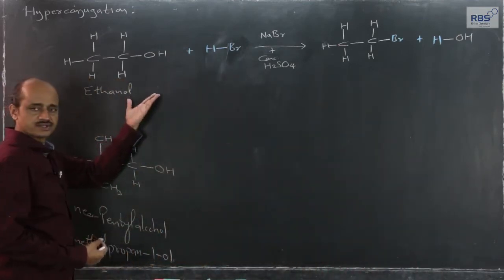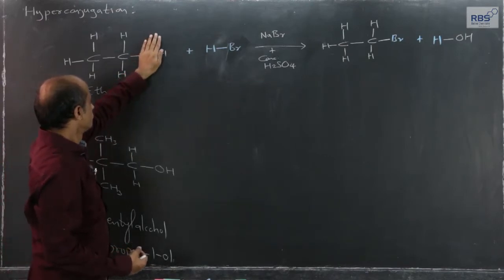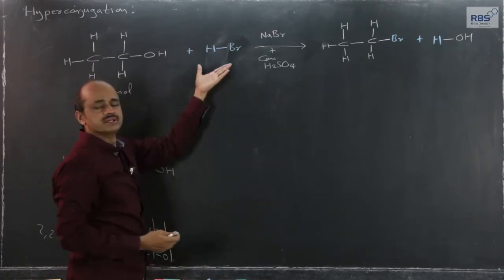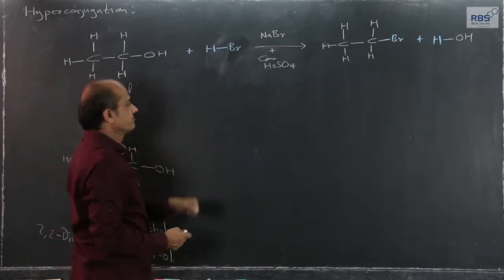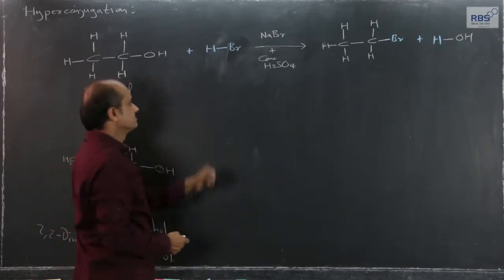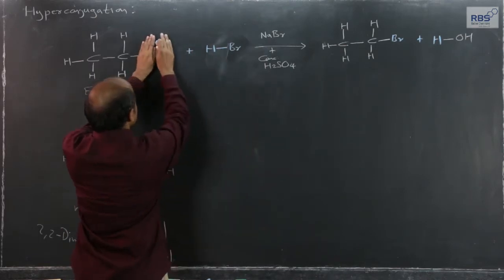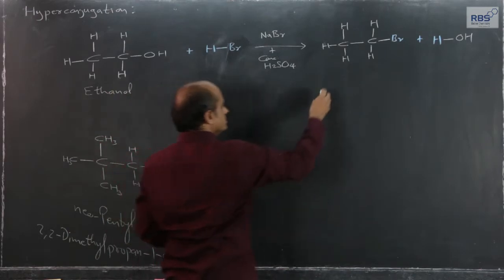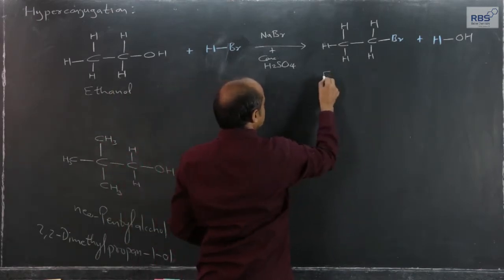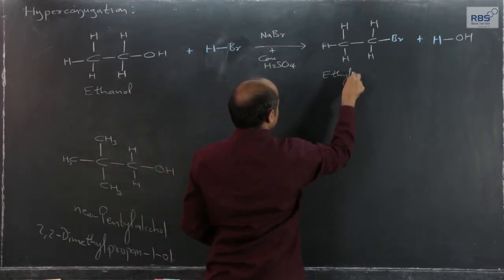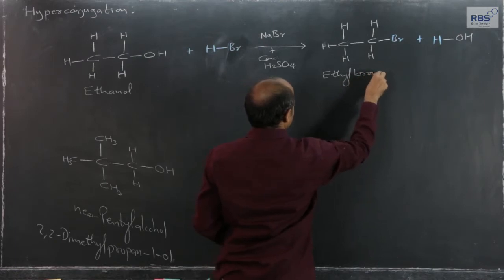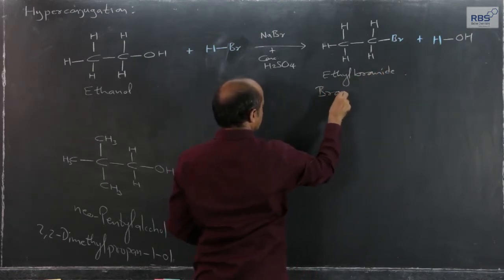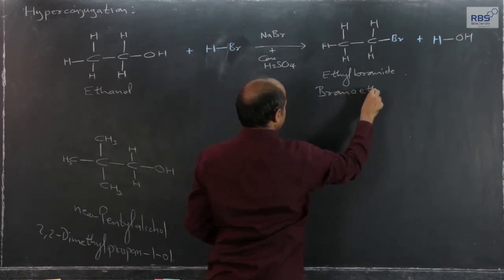This is the substitution reaction. The OH group of alcohol gets replaced by bromine — it can be HCl or HI. I have taken the example of HBr. The OH group is replaced by bromine and we get ethyl bromide, or as per IUPAC, bromoethane.